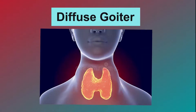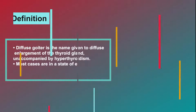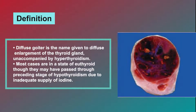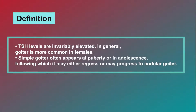Diffuse goiter, also called simple non-toxic goiter or colloid goiter. Definition: diffuse goiter is the name given to diffuse enlargement of the thyroid gland unaccompanied by hyperthyroidism. Most cases are in a state of euthyroid, though they may have passed through a preceding stage of hypothyroidism due to inadequate supply of iodine. TSH levels are invariably elevated. In general, goiter is more common in females. Simple goiter often appears at puberty or in adolescence, following which it may either regress or progress to nodular goiter.